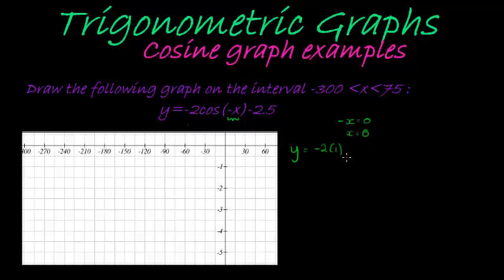It's -2 times 1 minus 2.5, which equals -4.5. So my starting point is (0, -4.5). There's 0, -4.5 is down here. That's my starting point.